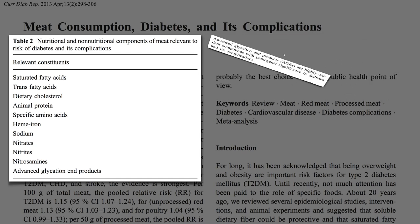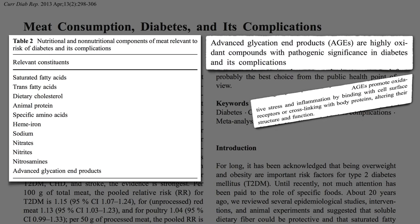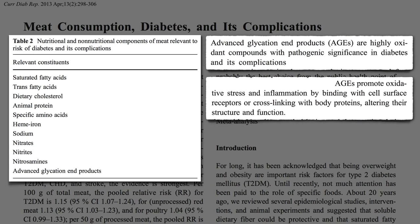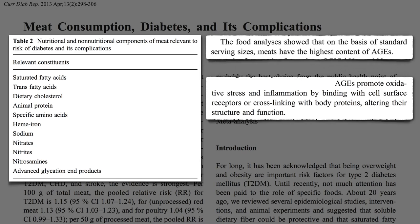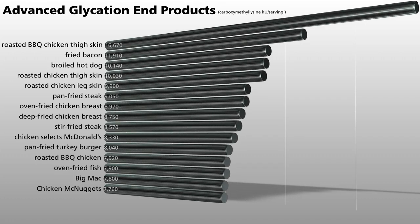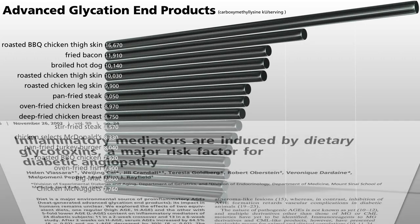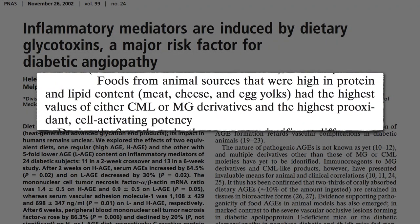Advanced glycation end products are another problem. They promote oxidative stress and inflammation. Food analyses show that the highest levels of these so-called glycotoxins are found in meat, particularly roasted, fried, or broiled meat, though any foods from animal sources can be potent sources of these pro-oxidant chemicals.